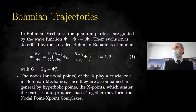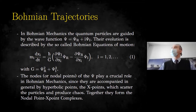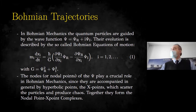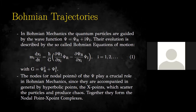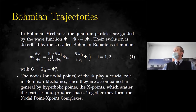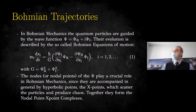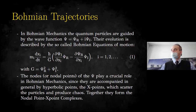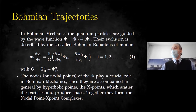I remind you that Bohmian trajectories are quantum trajectories — deterministic. In Bohmian mechanics, we have a quantum theory which, besides the usual Schrödinger equation, also has trajectories. The trajectories are guided by the wave function — the usual wave function, the solution of the Schrödinger equation — according to a set of deterministic equations called the Bohmian equations of motion.